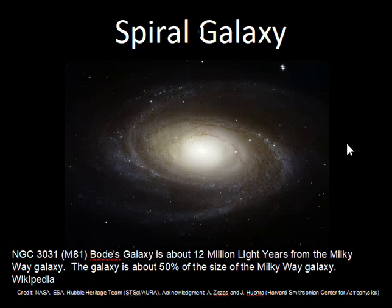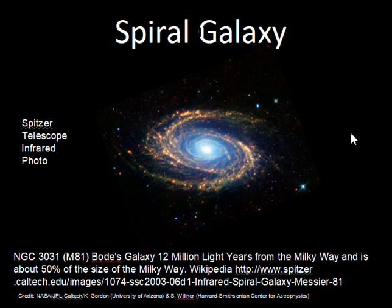M81, about 12 million light years from the Milky Way, again has a nice spiral arm structure. In the infrared, we again pick up where the dust is located in M81.